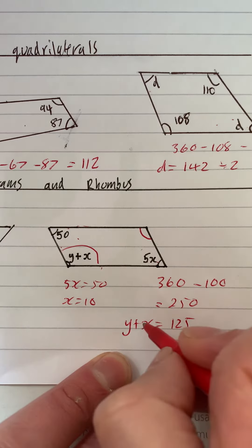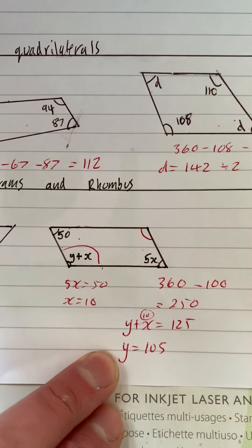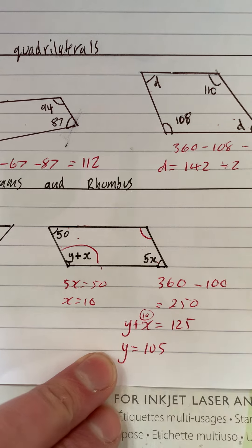If we know that x is 10, then y has to be 105 when x is 10. We just substitute that in, so y has to be 105.